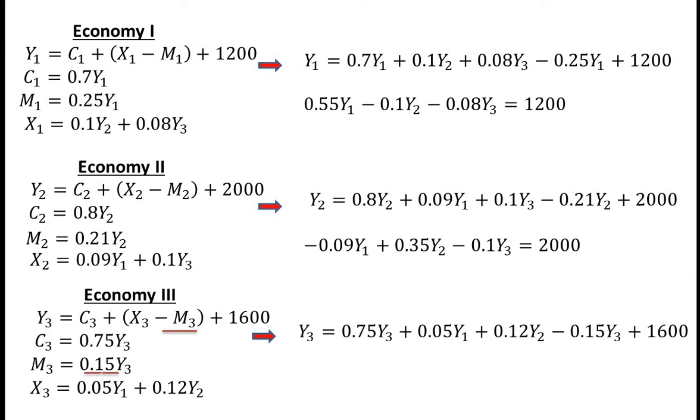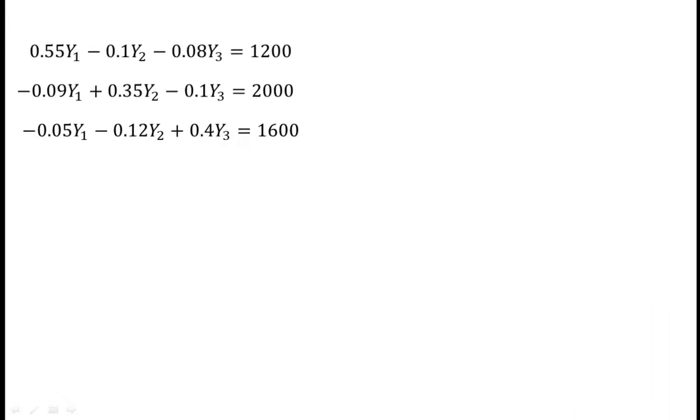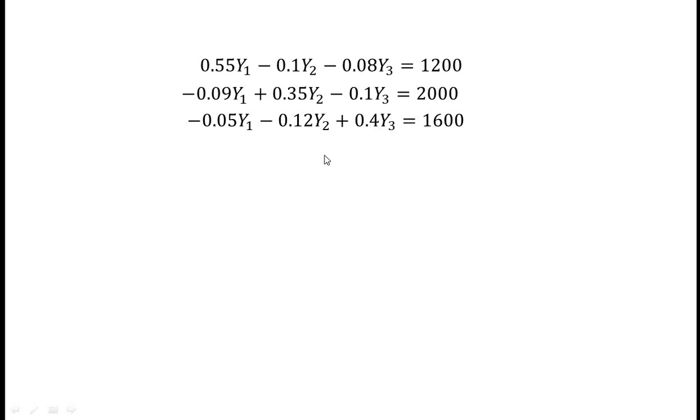Minus 0.05Y1 minus 0.12Y2 plus 0.4Y3 is equal to 1600. Now the macroeconomic relations of these three economies are explained by these three equations. These three equations are simultaneous equations.